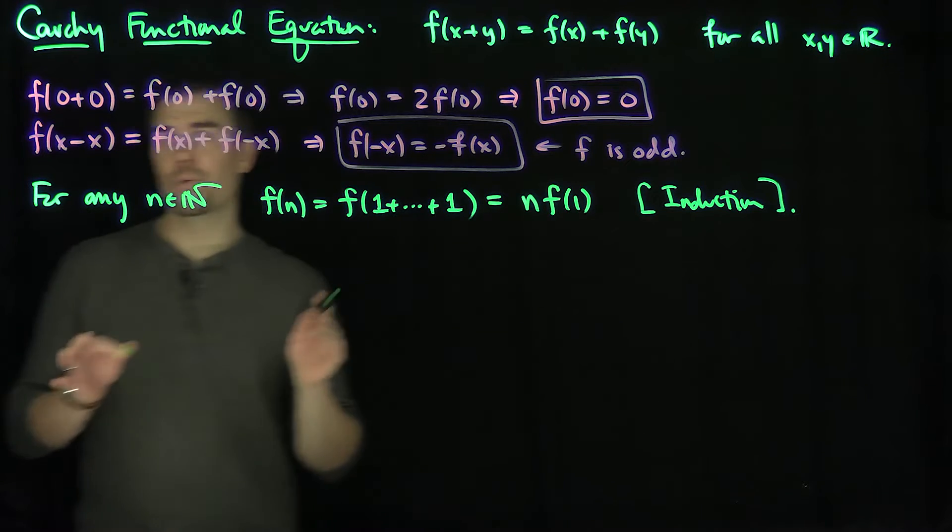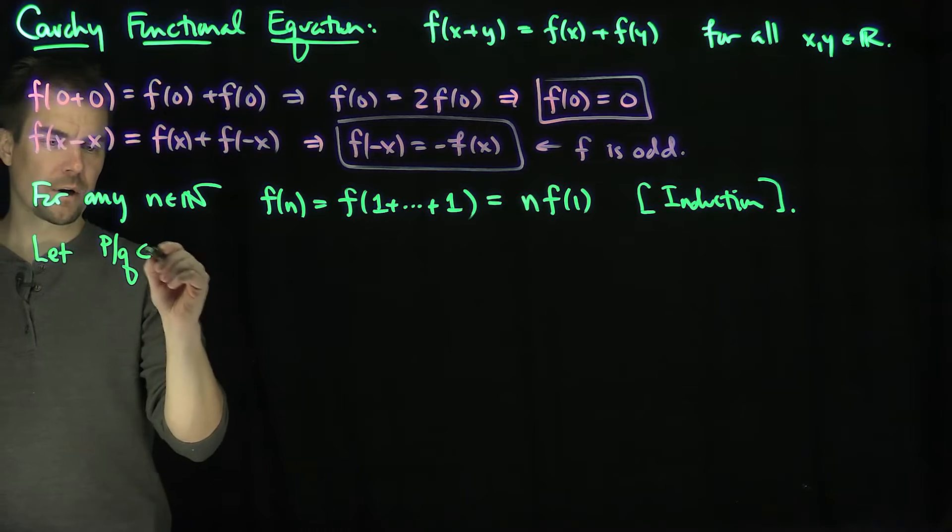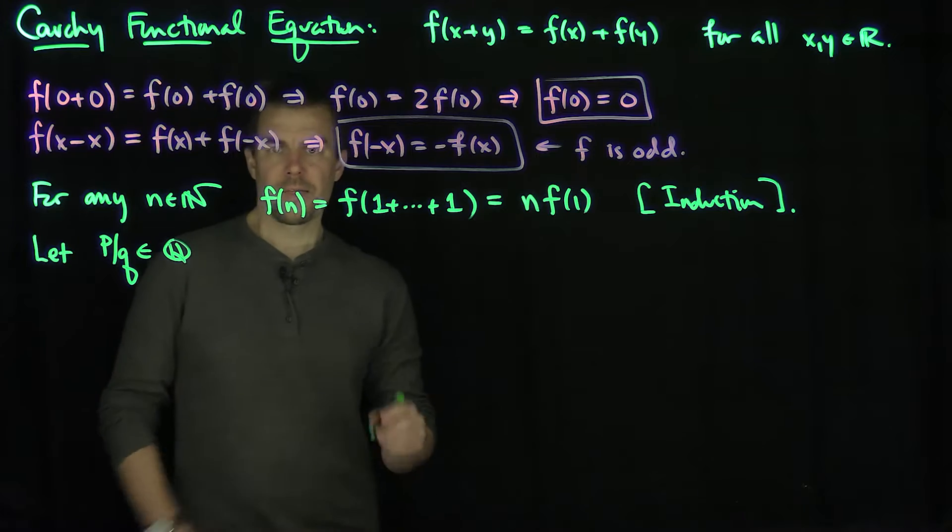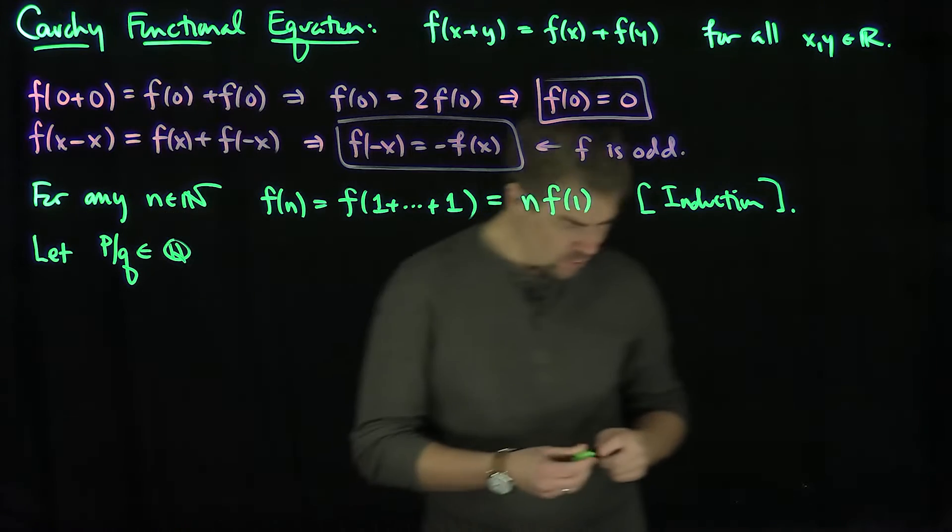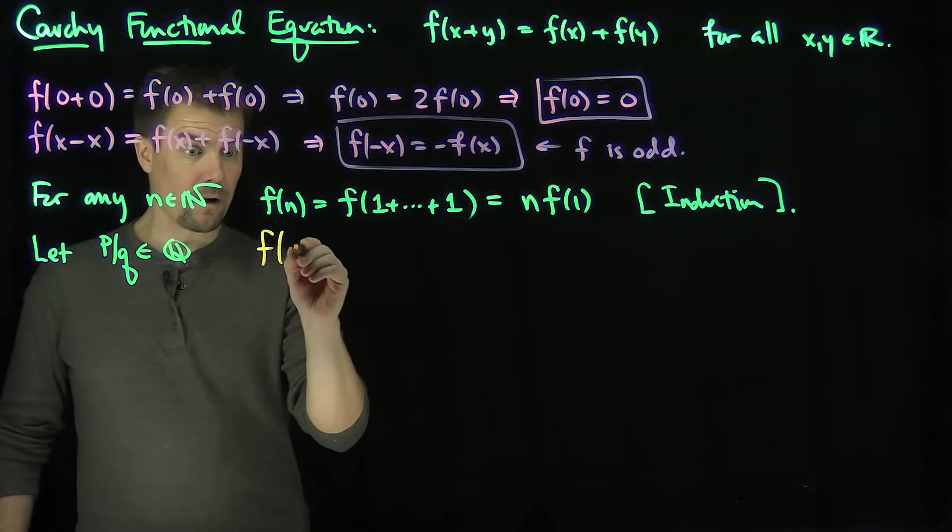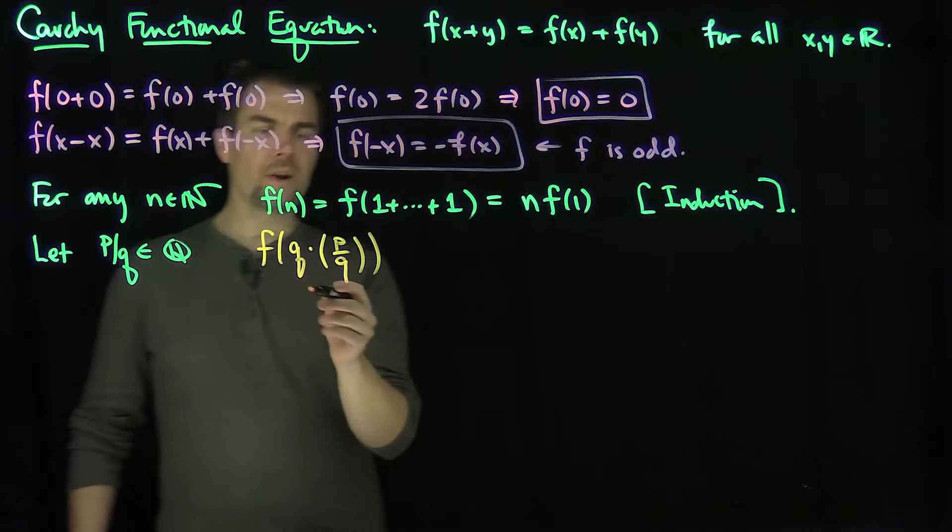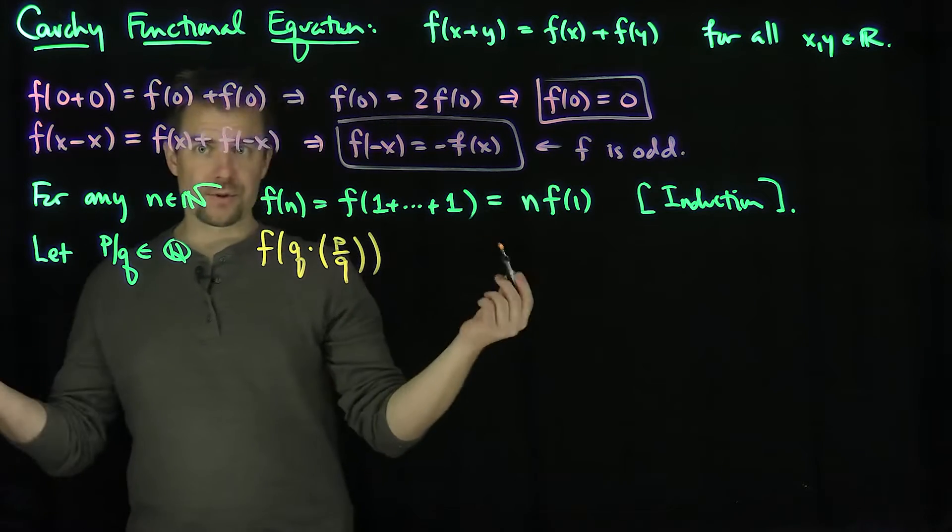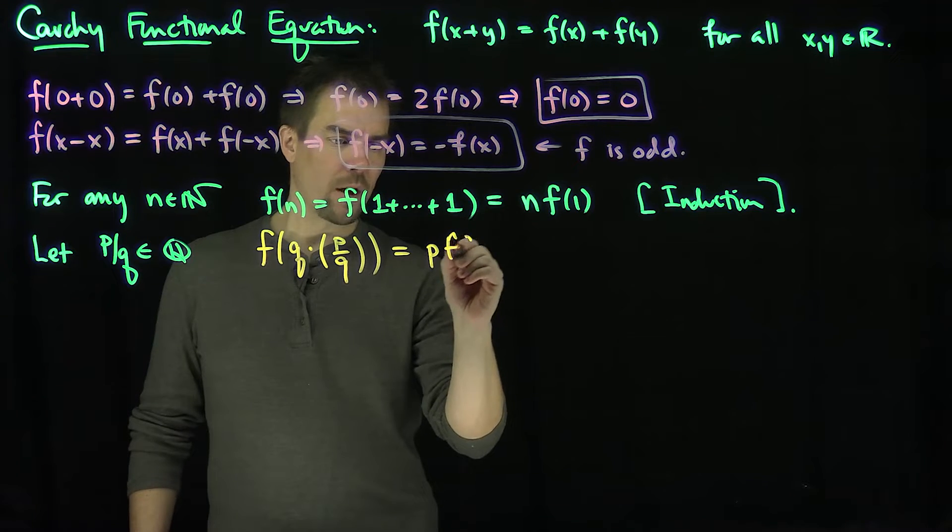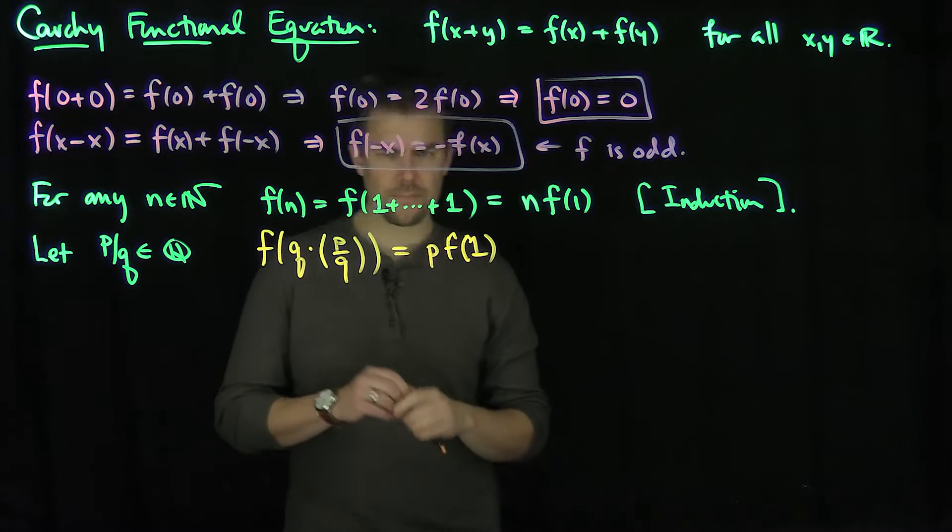Now I'm going to consider any rational number. So let p/q, q not equal to zero, be a point in Q. So I'll give you a point in Q. And then what I'm going to do is consider two representations. The first representation I'm going to consider is f(q times p/q). Well, on one hand, the q's will cancel, so it's just f(p). So this is just going to be p times f(1), by the result over here because p is an integer.